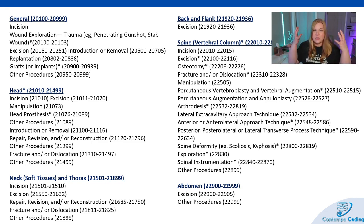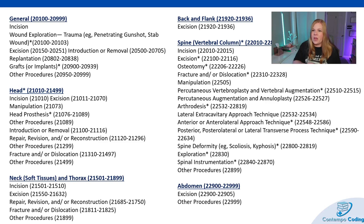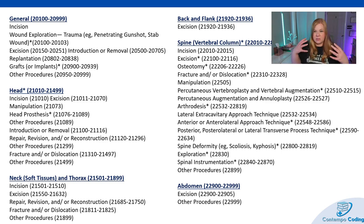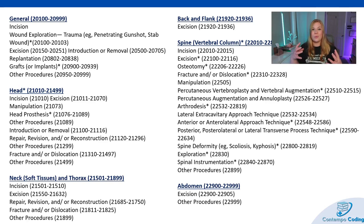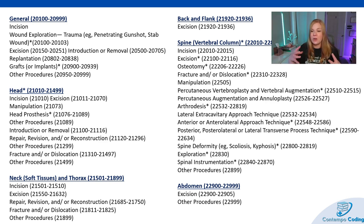Then we start with the head and see those procedures repeated: incisions, manipulations, head prosthesis, introduction or removal, repair, revision, reconstruction, and fracture or dislocations. Moving on to the neck, we have similar things — incision, excision, repair, revision, reconstruction. When you're looking in CPT and you start with one of those words like repair, revision, or reconstruction, that's going to give you a ton of codes in the directory.